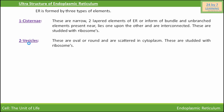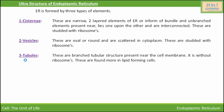The next element of endoplasmic reticulum is vesicles. These are oval or round and are scattered in the cytoplasm. These are studded with ribosomes. The next element of endoplasmic reticulum is tubules. These are branched tubular structures present near the cell membrane. They are without ribosomes and are found more in lipid-forming cells.